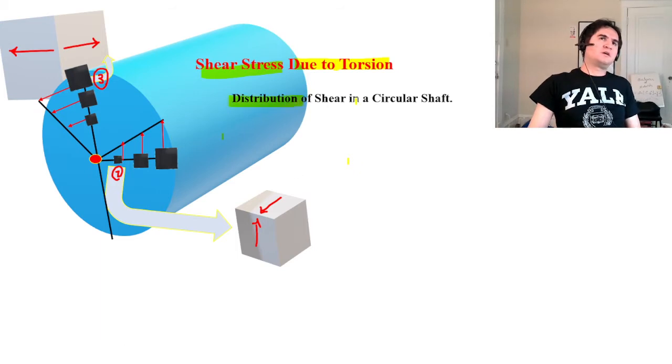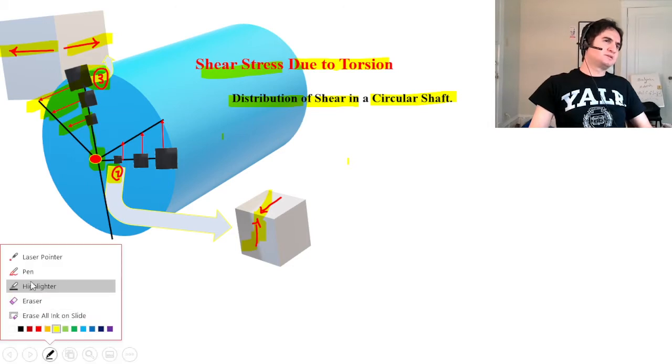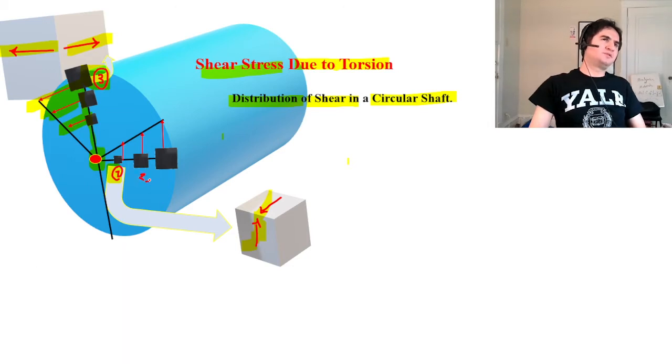Distribution of Shear in a Circular Shaft. As you can see in this figure, as we travel farther from the center of the circular shaft, we experience higher shear. So this is shear stress in element 3, and if we call this element 1 and element 3, so this is element 1, element 2, element 3.